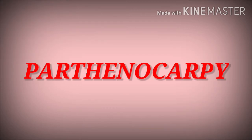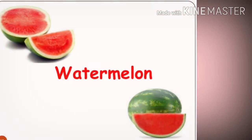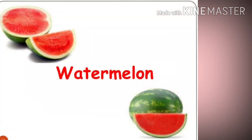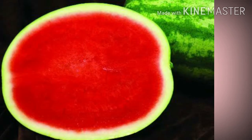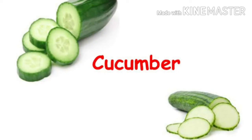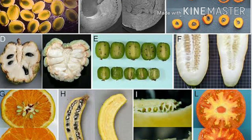Coming to parthenocarpy, it is the production and development of seedless fruits without pollination and fertilization. Parthenocarpy fruits are normal. It occurs in plants only. Examples include banana, papaya, watermelon, etc.